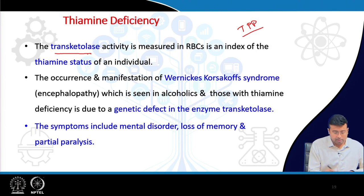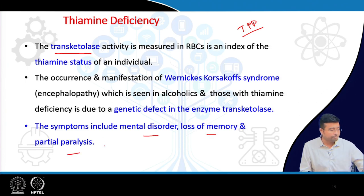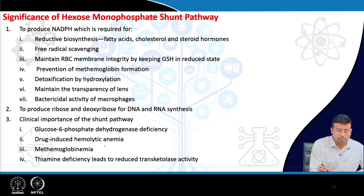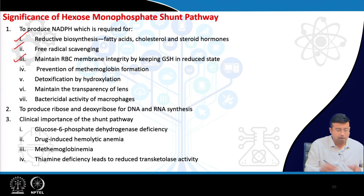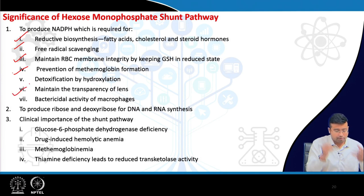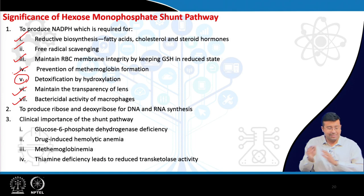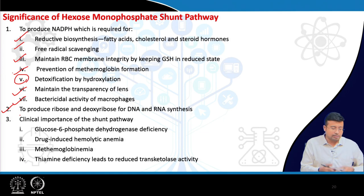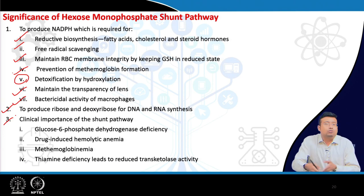The features of Wernicke-Korsakoff syndrome are loss of memory, mental disorder, and partial paralysis. In summary, HMP shunt significance includes: reductive biosynthesis of fatty acids, cholesterol, and steroid hormones; free radical scavenging; maintaining RBC membrane integrity; prevention of methemoglobin formation; drug detoxification by hydroxylation; maintaining lens transparency; and bactericidal activity of macrophages. The non-oxidative phase produces DNA and RNA building blocks via pentoses.